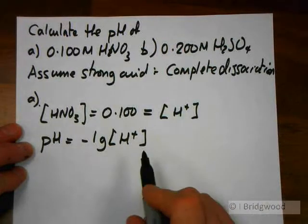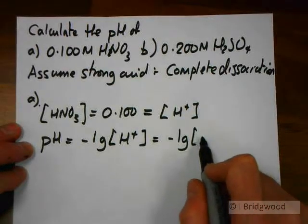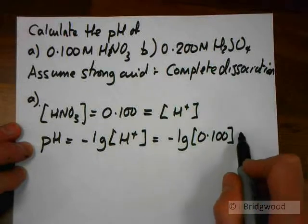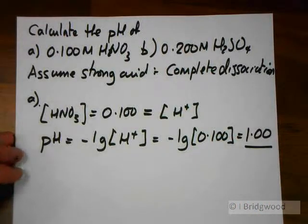And therefore the negative log of 1 times 10 to the minus 1 is equal to 1. Always quote to two decimal places.